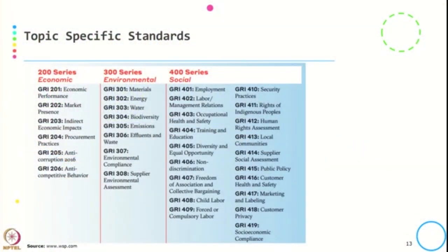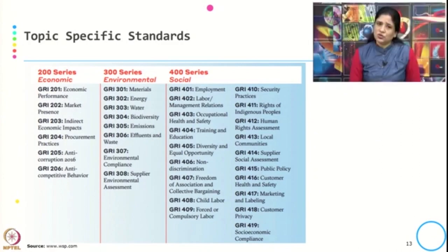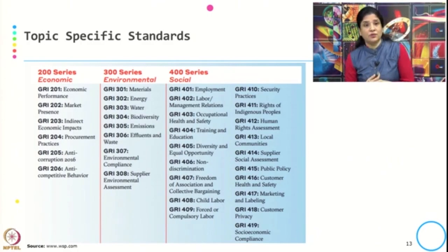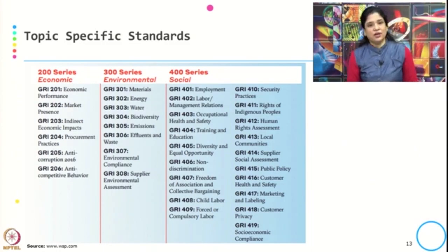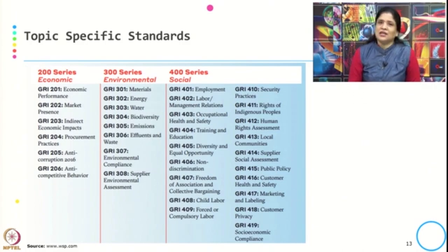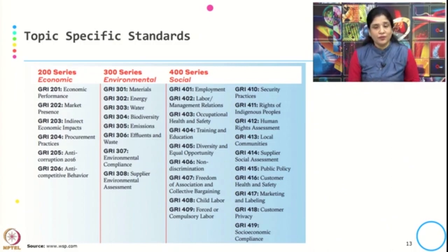The topic-specific standards and their coverage are: the 200 series covers economic topics — economic performance, market presence, anti-competitive behavior and anti-corruption. The 300 series covers environmental topics — starting from materials, through compliance and supplier environmental assessment. The 400 series covers social topics — a long list from employment through to customer privacy, data privacy and socioeconomic compliance.